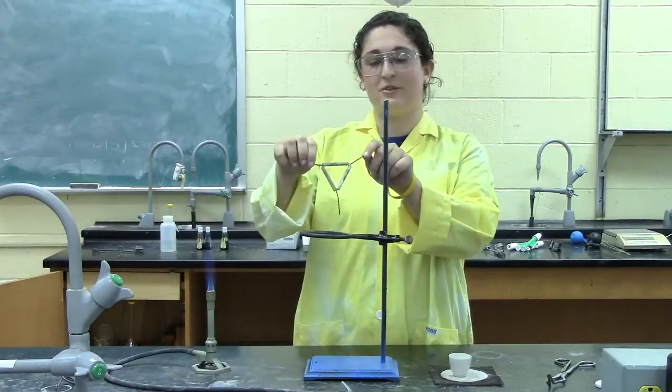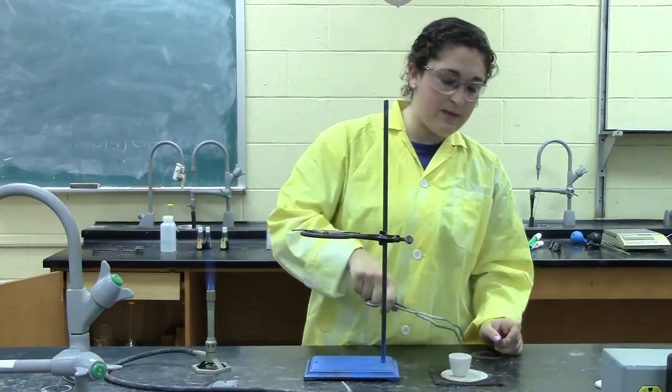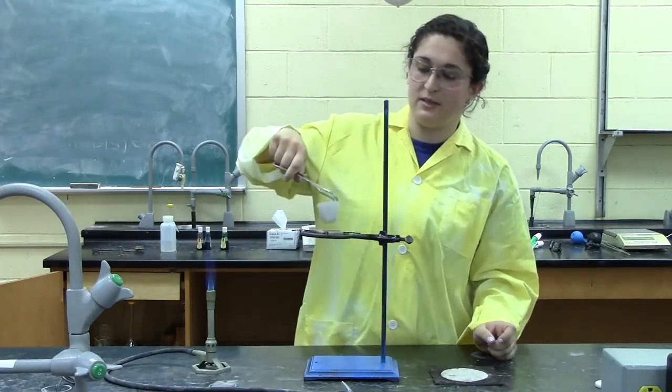You place the clay triangle on top of the ring, and then pick up your crucible with your tongs and place it on to dry.